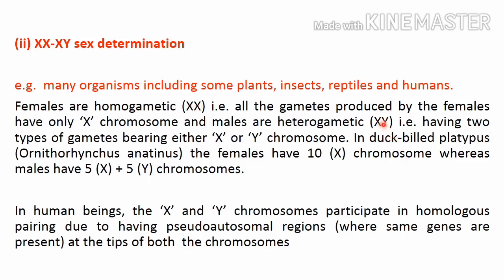In males, two types of gametes are produced: some have the X chromosome and others have the Y chromosome, so males are heterogametic. In the duck-billed platypus, Ornithorhynchus anatinus, the females have 10 X chromosomes and the males have 5 X and 5 Y chromosomes.